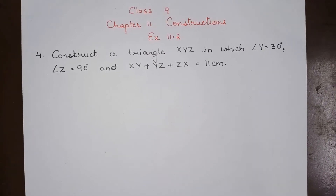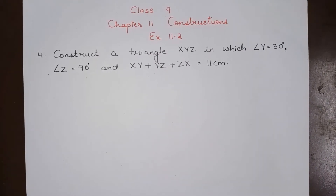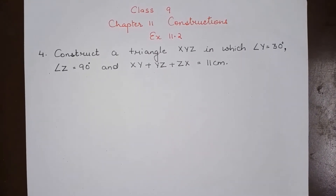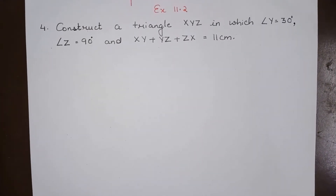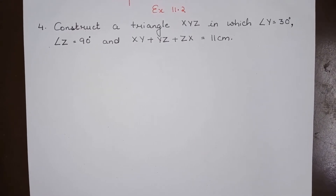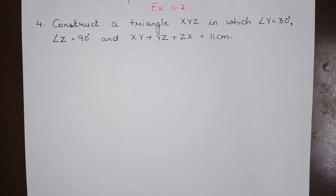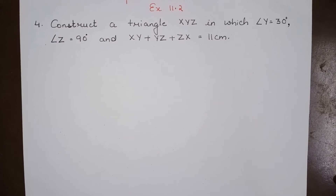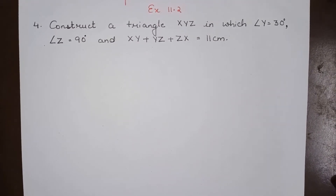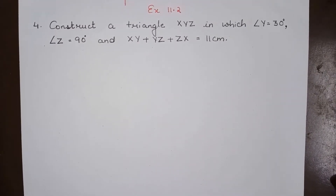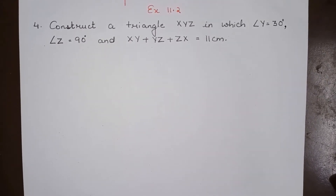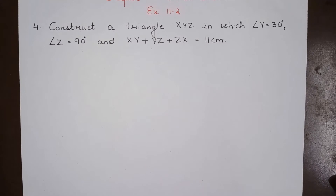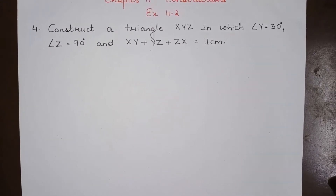Hello everyone. Today we will do class 9th chapter 11th constructions exercise 11.2 question number 4: construct a triangle XYZ in which angle Y is 30 degrees, angle Z is 90 degrees, and XY plus YZ plus ZX is 11 cm — that is, the perimeter of this triangle is 11 cm.